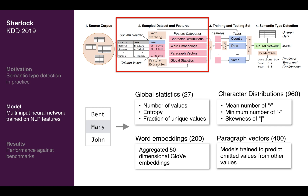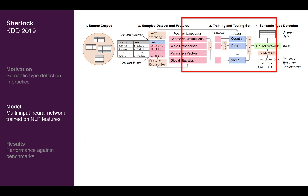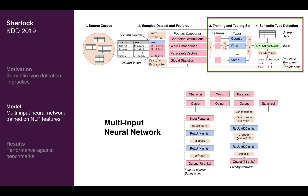We create fixed-length representations of variable-length columns, aid interpretation of results, and provide hints to our main neural network. Because each category of features differs in dimensionality, noise level, and other data characteristics, we train a subnetwork for each feature category, then combine the outputs of each subnetwork into a primary multi-input neural network.